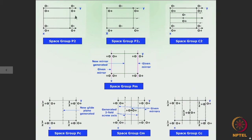Looking at the arrangement of the groups of atoms here, consider this group O plus and this group O minus — they have a relationship as if there is a twofold rotor passing through the center of the unit cell. Similarly, O minus here and O plus here are arranged as if there is a twofold rotor present there. This twofold rotor was not consciously used, but it comes into existence because of the arrangement of atoms possible after rotation around the twofold rotor along the y axis.